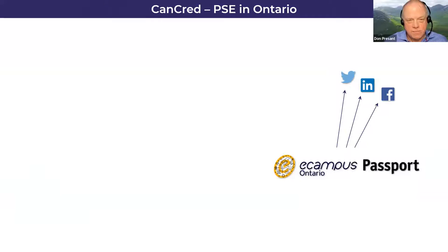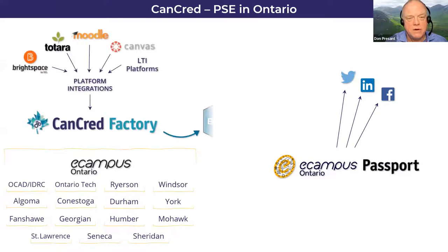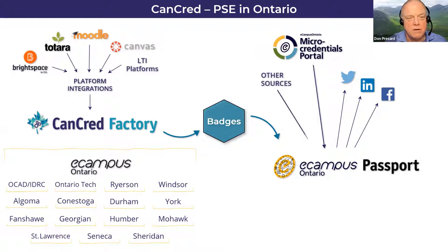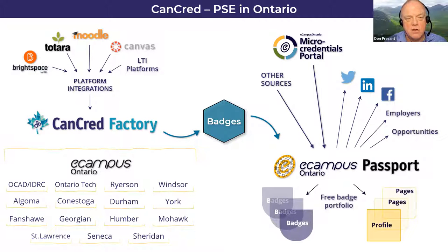The passport is a province-wide service run by eCampus Ontario for the Ontario post-secondary community. It's a free service for end users who can use it to store their badges and share them, typically to social media. The passport currently gets most of its traffic from about a third of the institutions in Ontario who are using CanCred Factory directly. But passport can host digital open badges of all kinds, including micro-credentials, from a wide variety of platforms and providers, as long as they support the open badges standard.